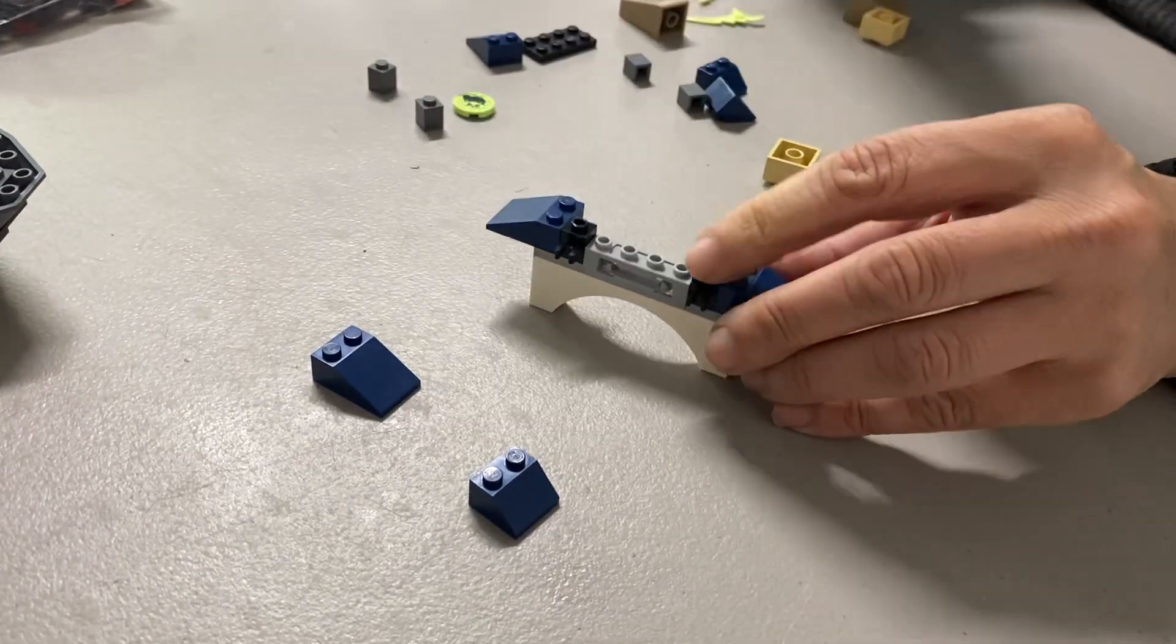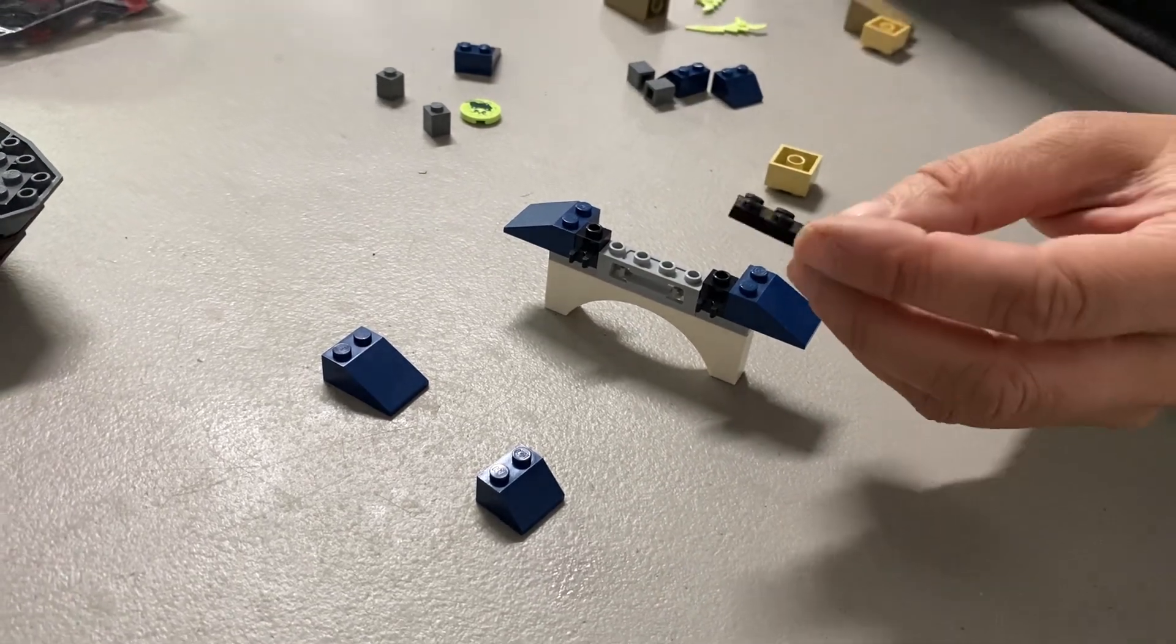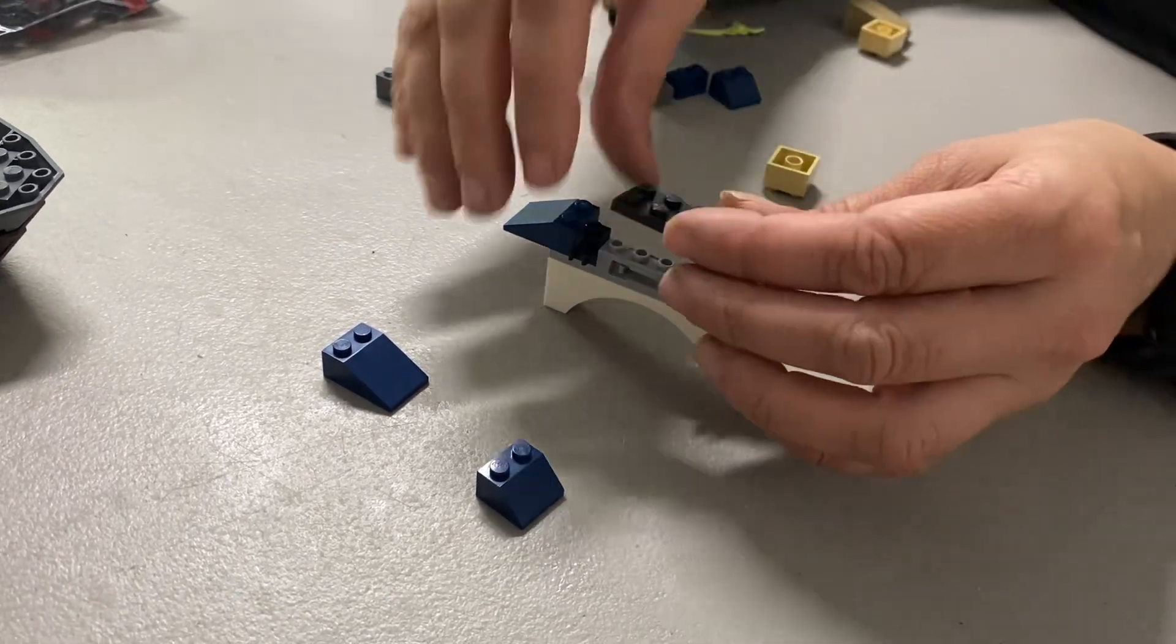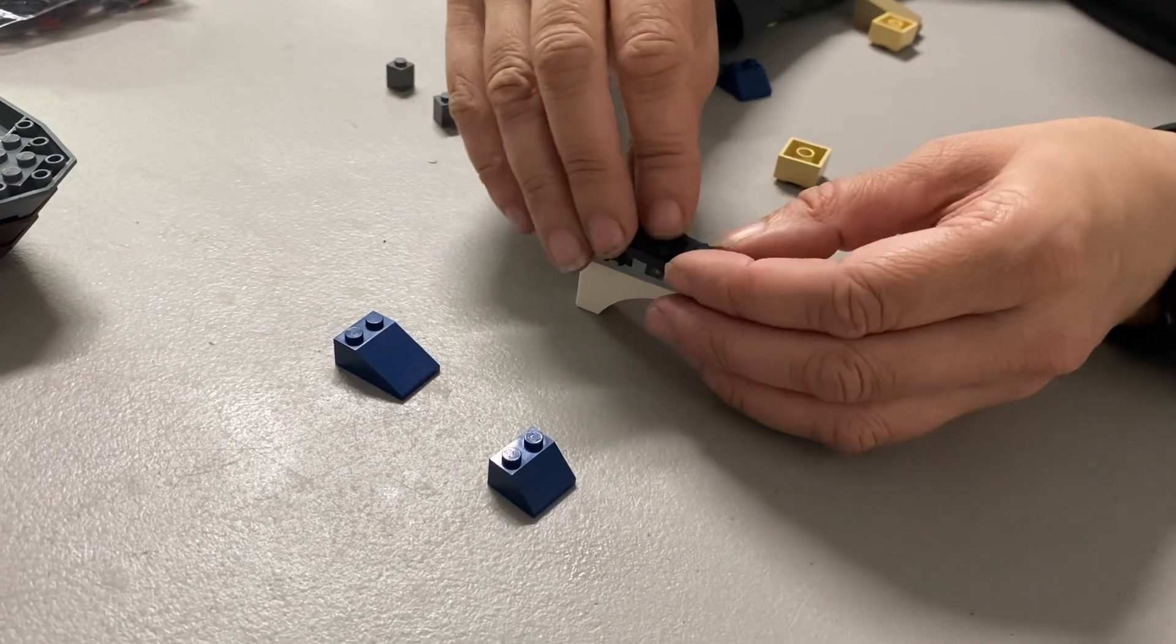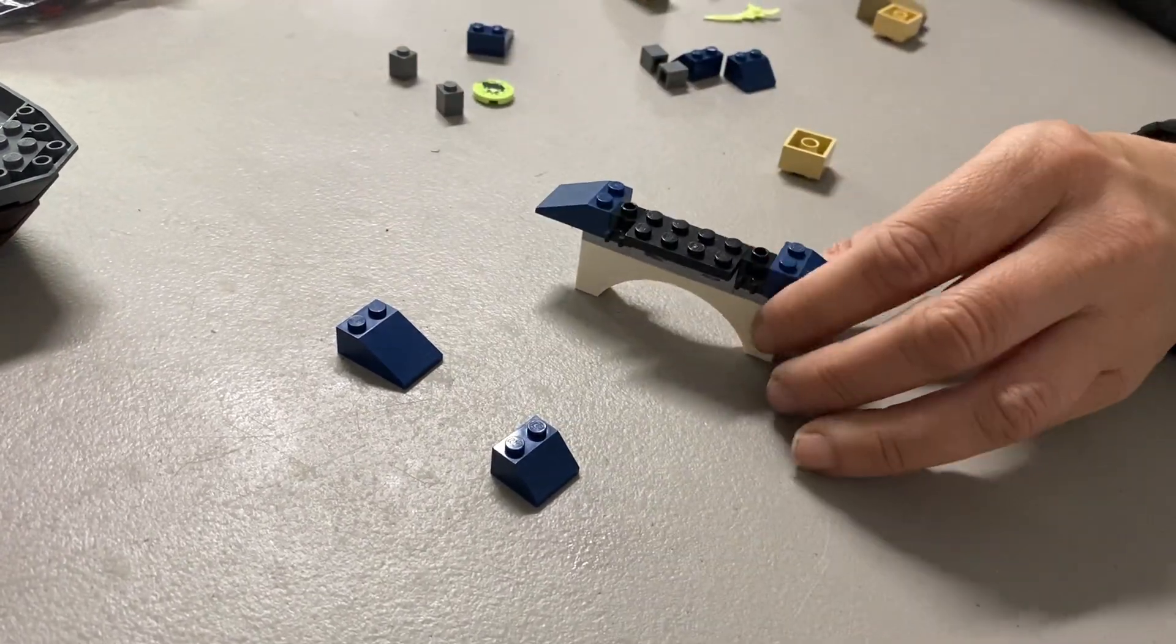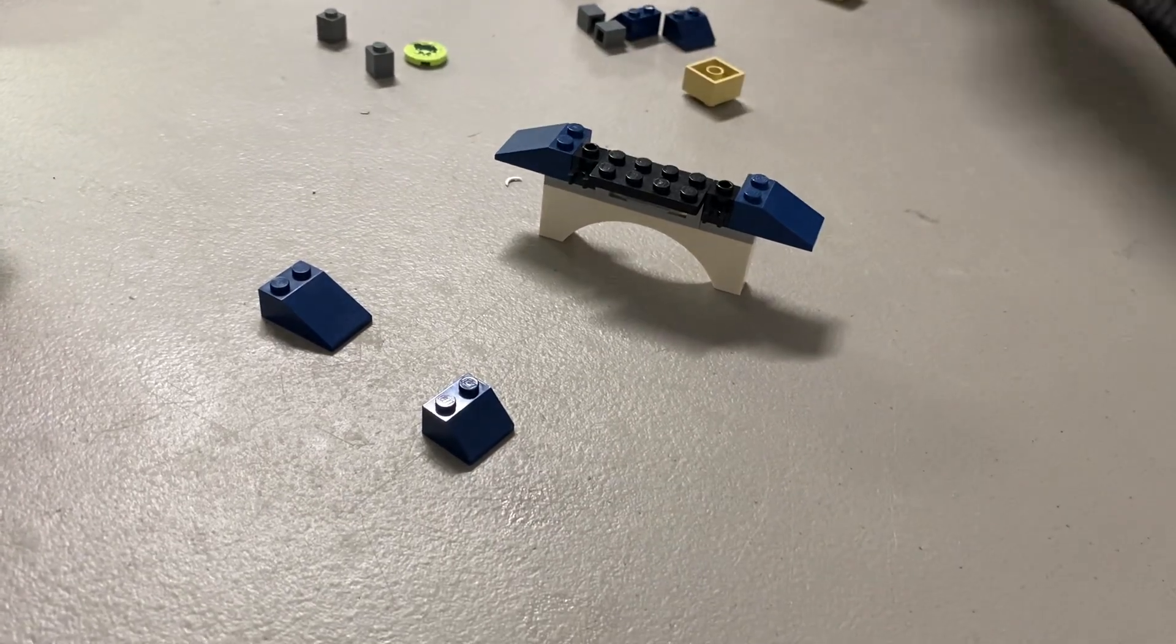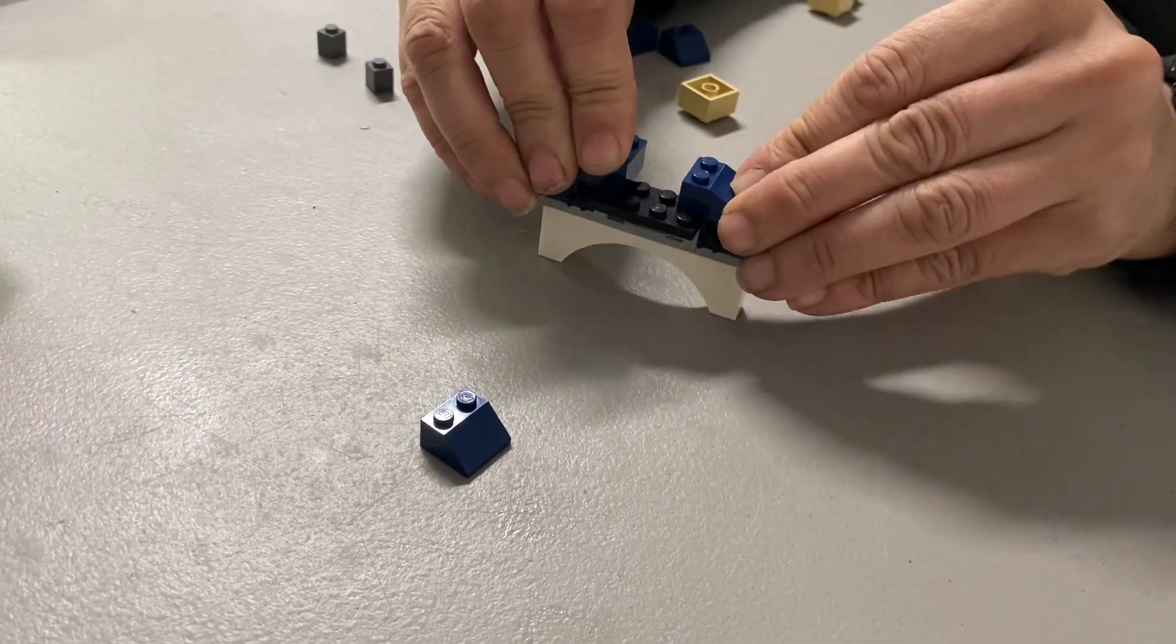Now you have a 2x4 plate, and you're going to stick it on top of your 1x4 so that it sticks out the same side as the clips. And now you're going to take two more long slopes and you're going to stick them like this.